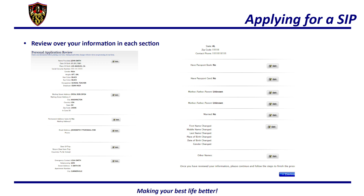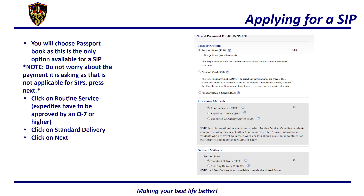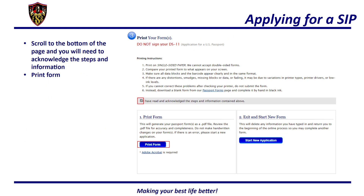If it is correct, press next. You will then be given several options for a passport — you will need to choose passport book, as this is the only option available for a SIP. Do not worry about the payment it is asking, as this is not applicable for SIPs. You will then click on routine service, as expedites have to be approved by an O-7 or higher. Next, click on standard delivery and then click next. Scroll to the bottom of the next page and acknowledge the steps and information. Note: do not sign your DS-11, as this has to be done in person. Make sure to print the form.